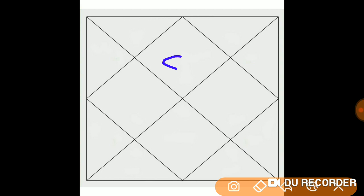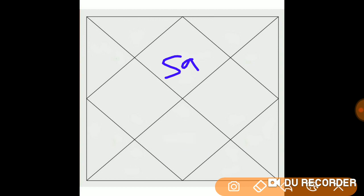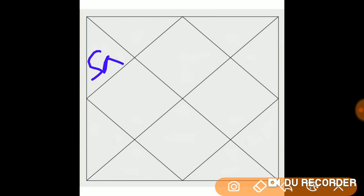Whenever Saturn and Mars are in a 1-7 axis — meaning Saturn is 7 places from Mars and Mars is 7 places from Saturn, so they are opposite each other — then it can give some problem in your married life. Even when Saturn and Mars are sitting together, it gives problems in married life.